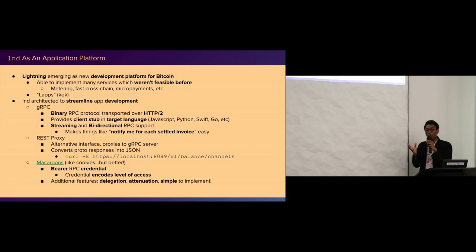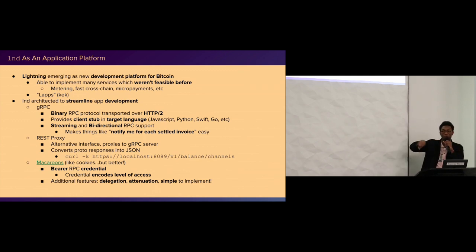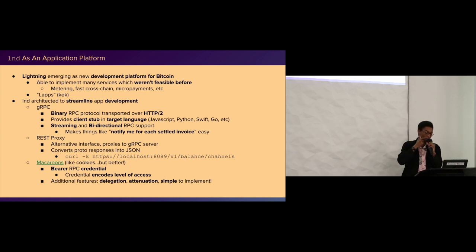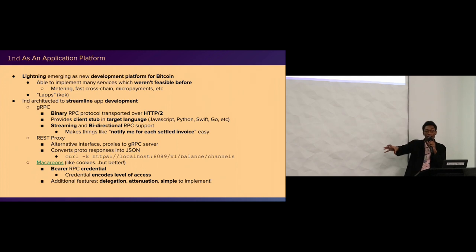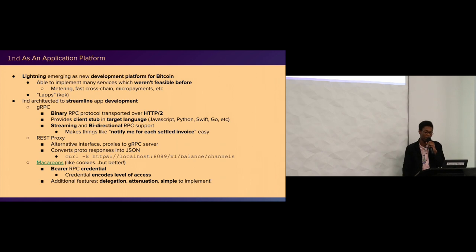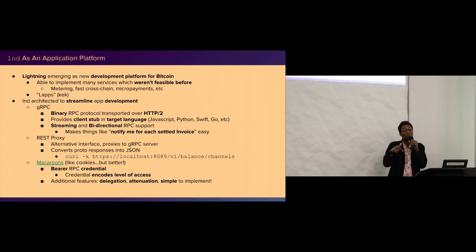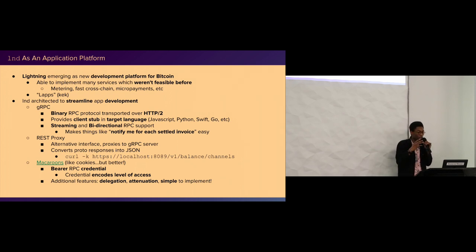We also have a REST proxy if you don't want to use gRPC - maybe you prefer typing raw HTTP queries on the command line. All requests are proxied over to the gRPC server and done using JSON. We have Macaroons with specific types: a read-only Macaroon we can give out for reading channels, and an invoice Macaroon for a server that only accepts payments on Lightning and can't do anything else - even if compromised, they can only make invoices and addresses. We also have a bakery plan coming soon where I can say 'here's a Macaroon that can only make channels below 2 BTC on Wednesday,' enabling very fine-grained authentication.